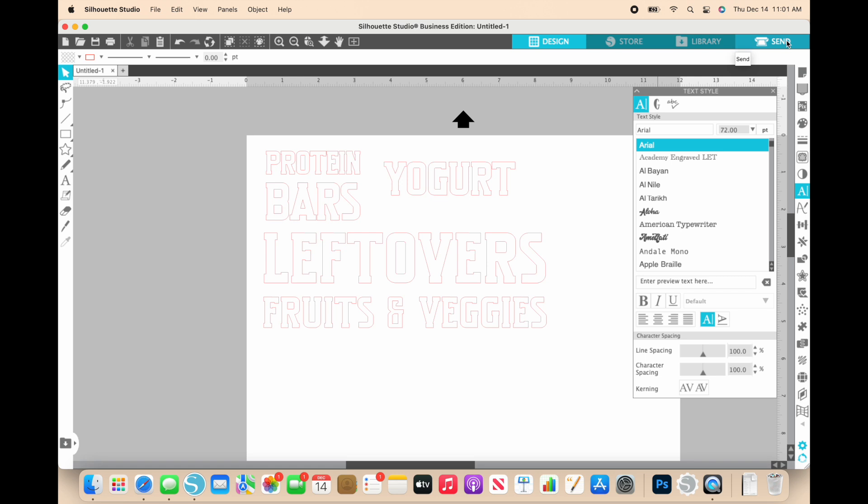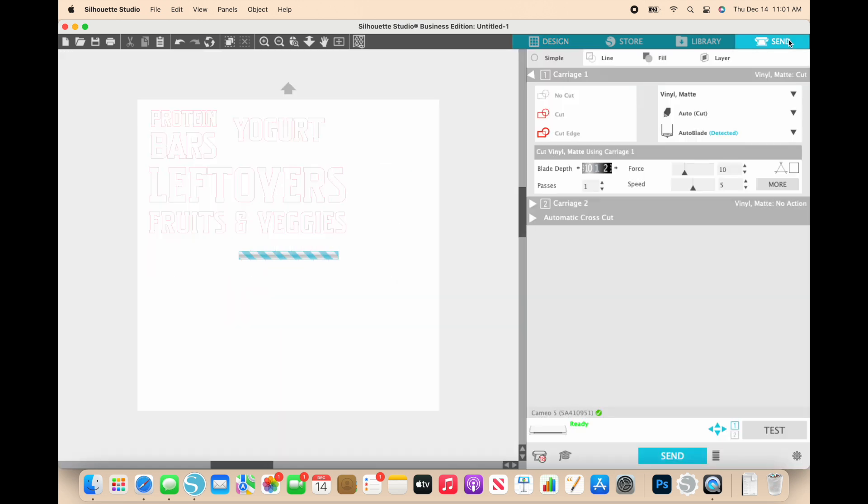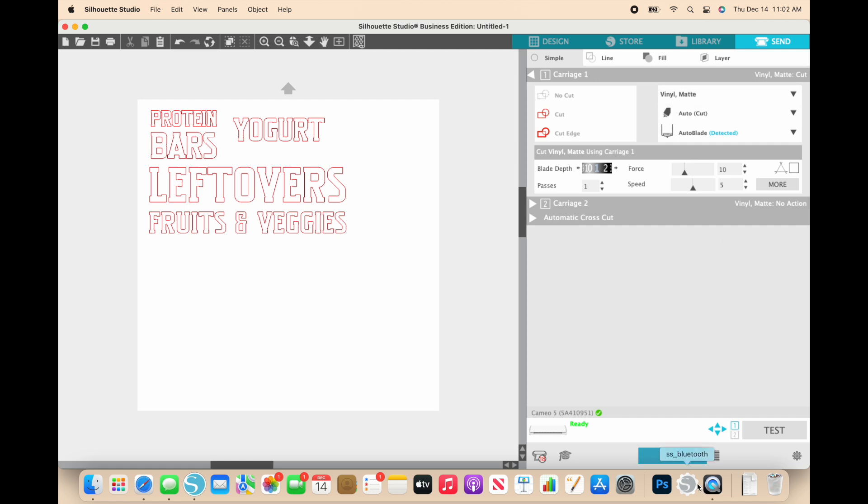And now we're going to go back to our, in our software, and we're going to be in our send panel. And I've already connected to my machine down here, and then I actually am using matte vinyl today. I was using that last night on a project. So now, all we need to do is click send at the bottom.